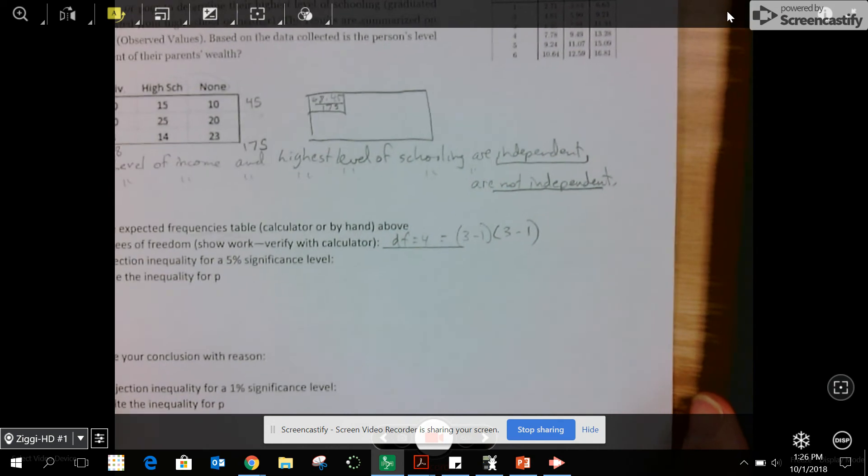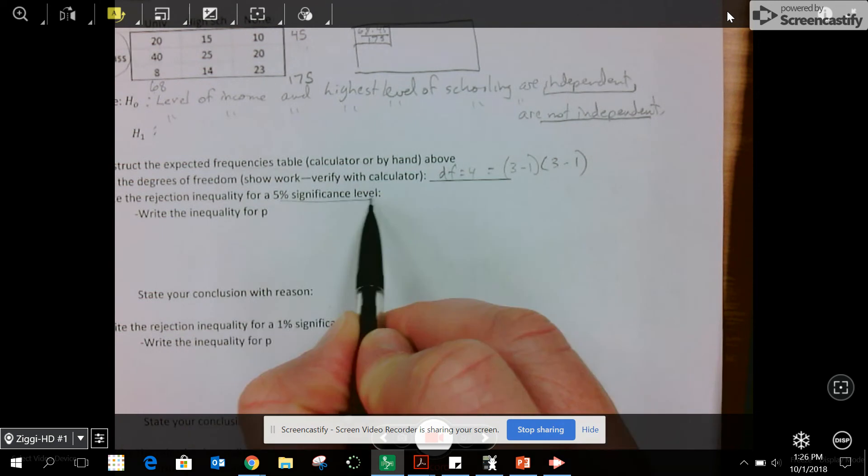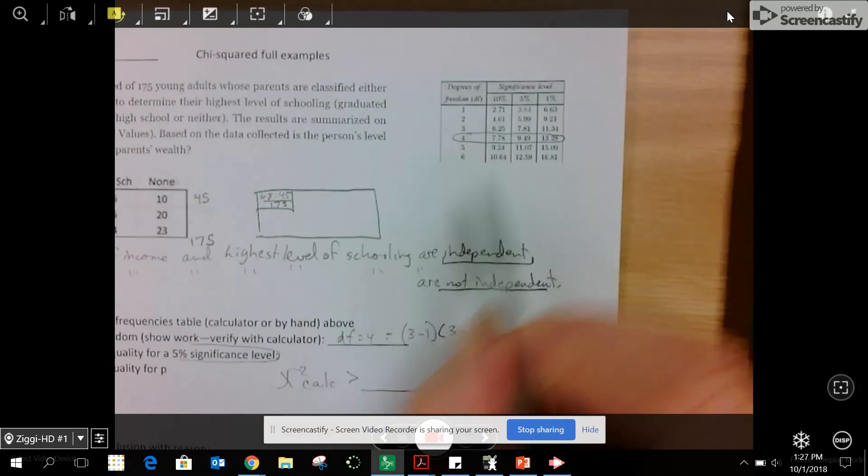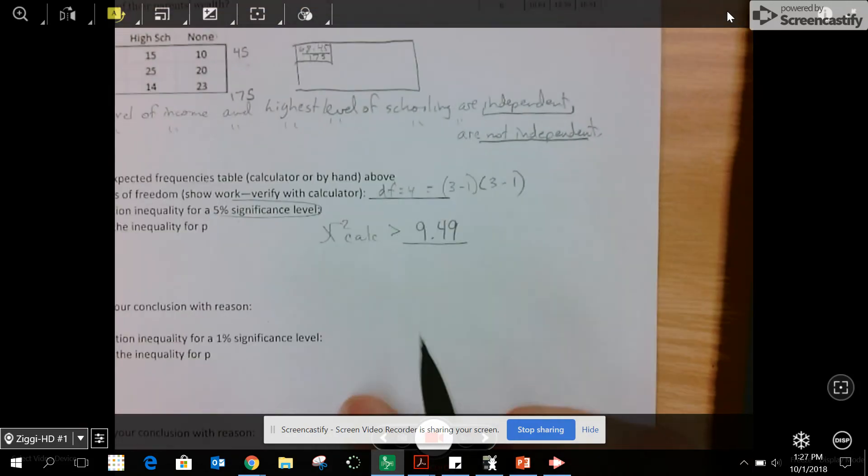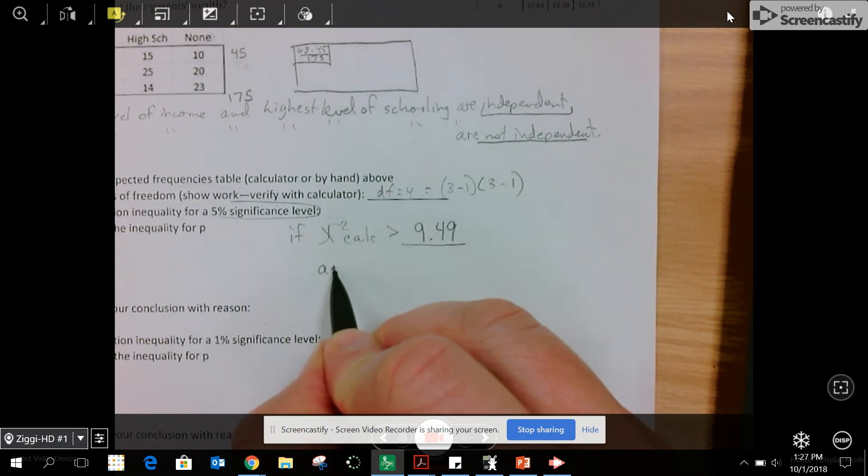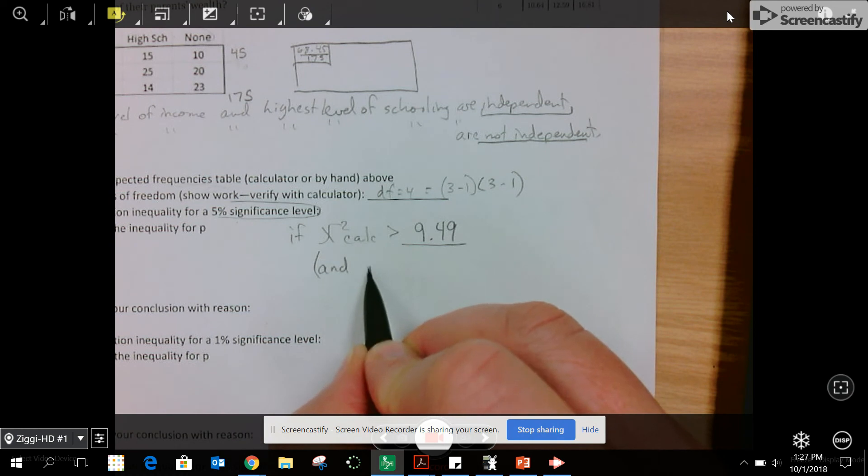Write the rejection inequality for a 5% significance level. The rejection inequality is chi-squared calculated greater than the chi-squared from the table. I have four degrees of freedom and I'm calculating at a 5% level, so my table value is 9.49. The same equivalency would be if the P value is less than 0.05. Notice these signs are opposite. The result would be to reject H0 if it's not true. We fail to reject and accept that they're independent.